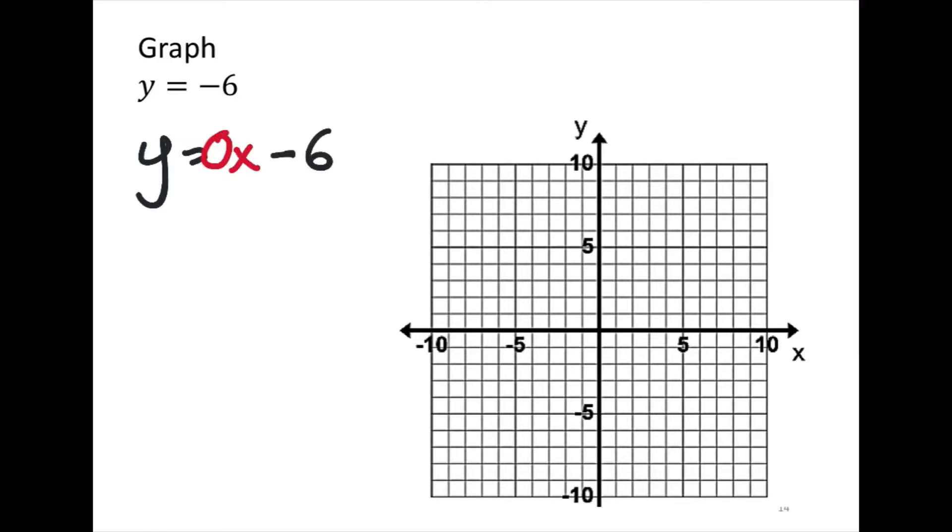So again, it's a phantom 0 thing, because anything times 0 is 0, so 0x will work, which means that we do have a y-intercept at 0, negative 6, which would be right here.